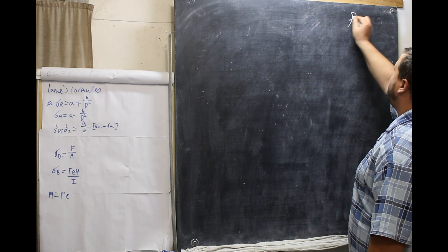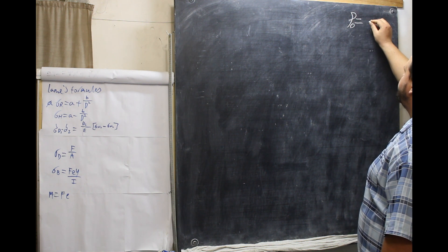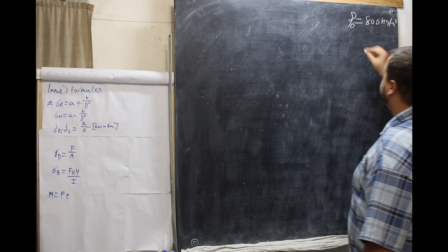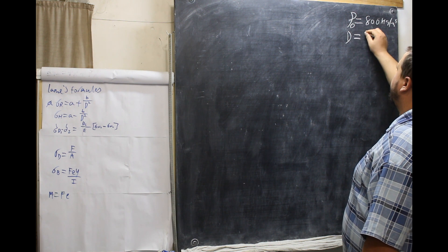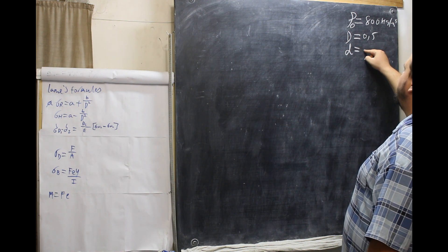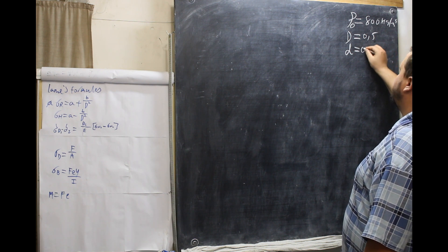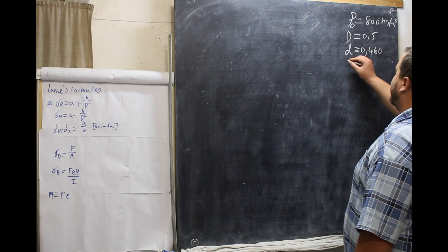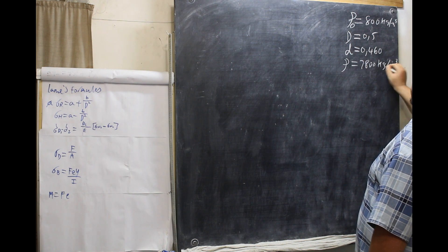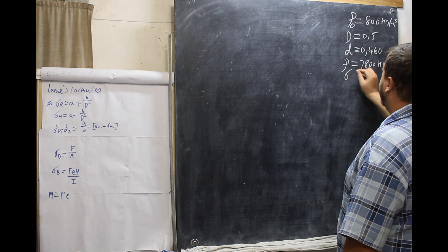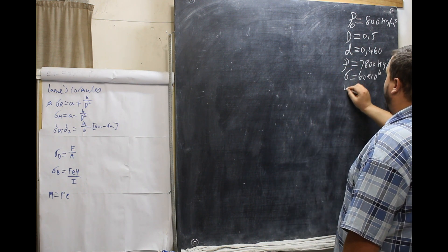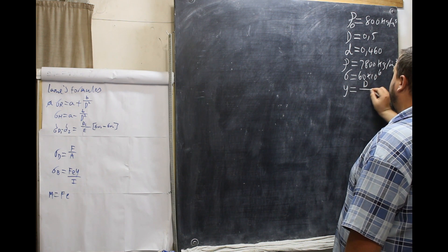Let's get our values in order. Density of the oil is 800 kg per meter cubed. The diameter, the big diameter, is 0.5. The little diameter, because the wall thickness is 20, so you're minus 40 from 500, that is 0.460. The density of the pipe material is 7,800 kg per meter cubed. The stress is 60 times 10 to the 6. And, because of a formula that we're going to use later, Y is equal to D divided by 2.